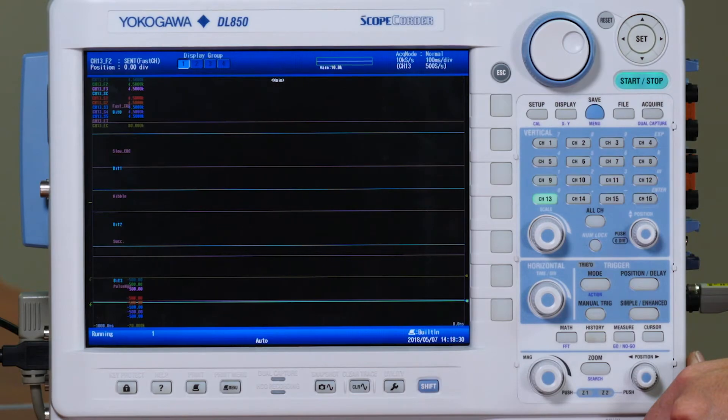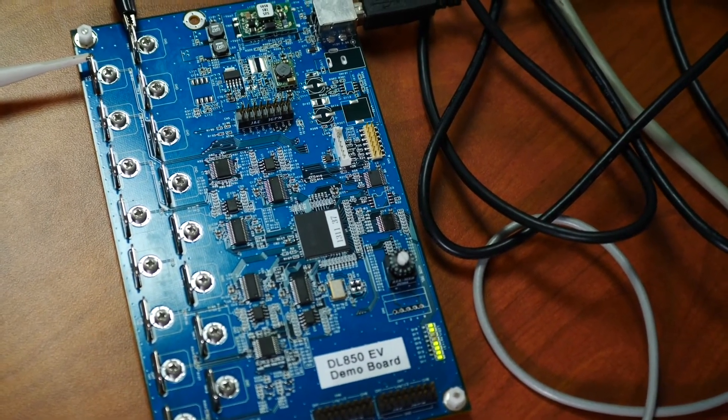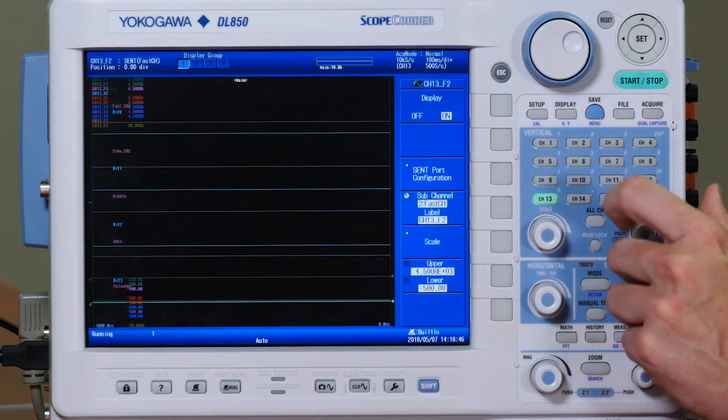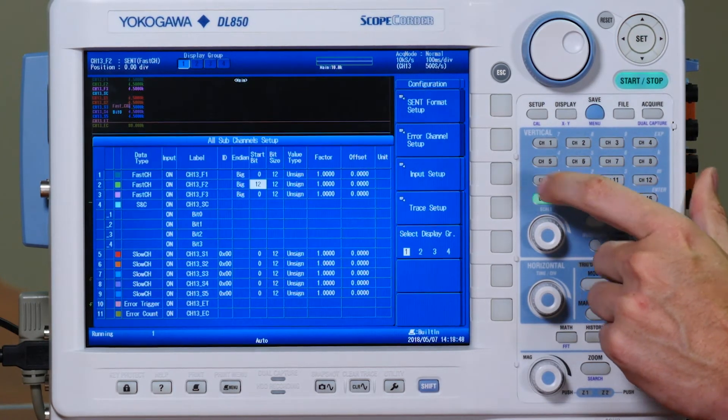For this test, we are using a signal generation board to create three fast channel waveforms and two slow channel waveforms. For each of these waveforms, we will have to apply settings so that all five channels are decoded properly. To do this, we will have to go to channel 13 and then go to SENT port configuration.